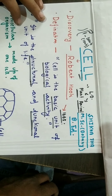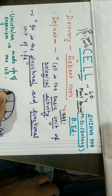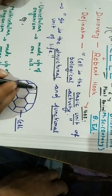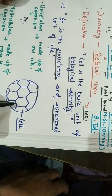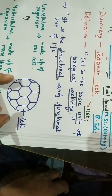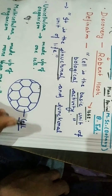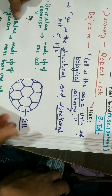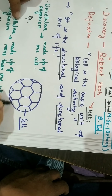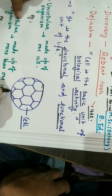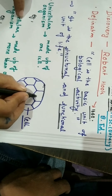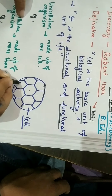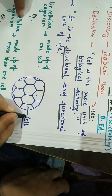He saw the cell. It is like a room — made up of many bricks together. He saw the cell like a room made up of many bricks, and he called all those brick-like units a cell.